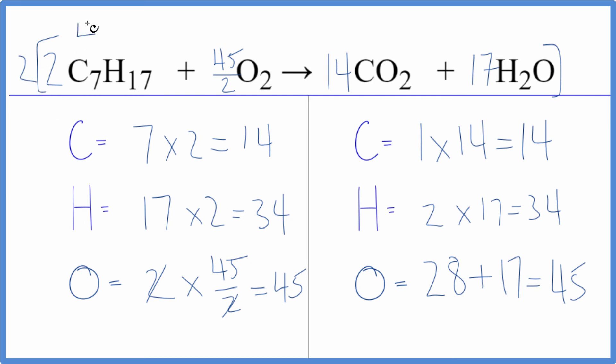So two times two is four. Two times 45 over 2, the twos would cancel out, we'd have 45. Two times 14 is 28. And then two times 17, that's 34. So these would be the whole number coefficients for our equation here.